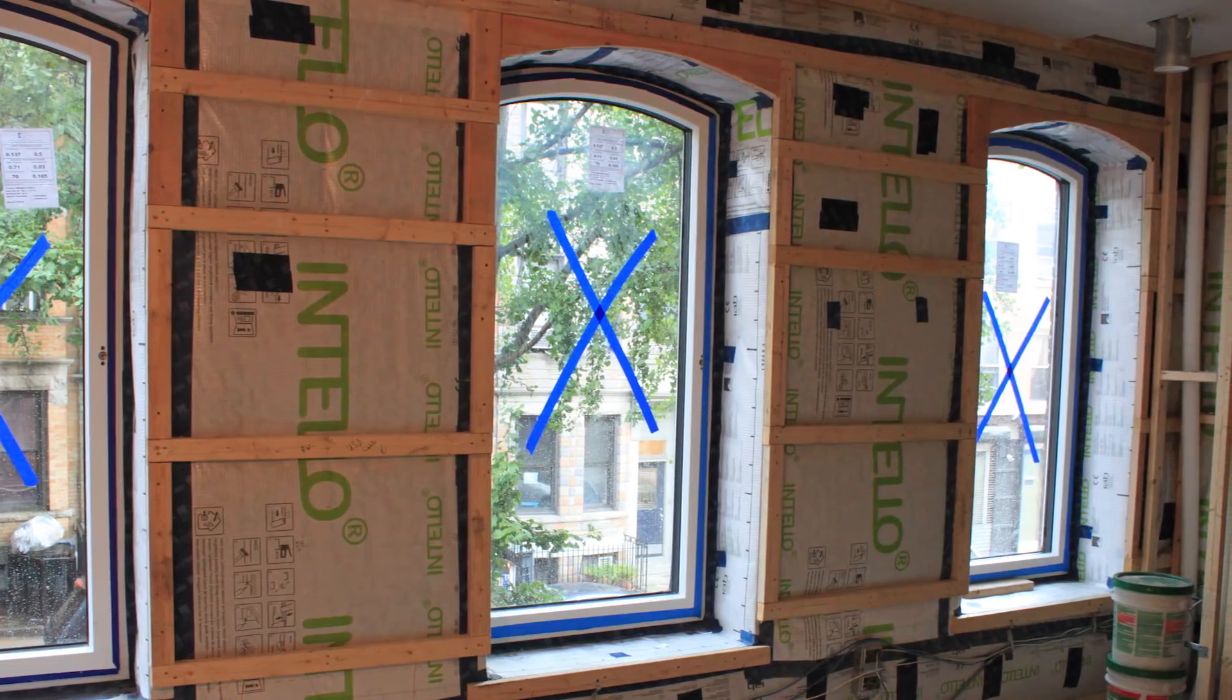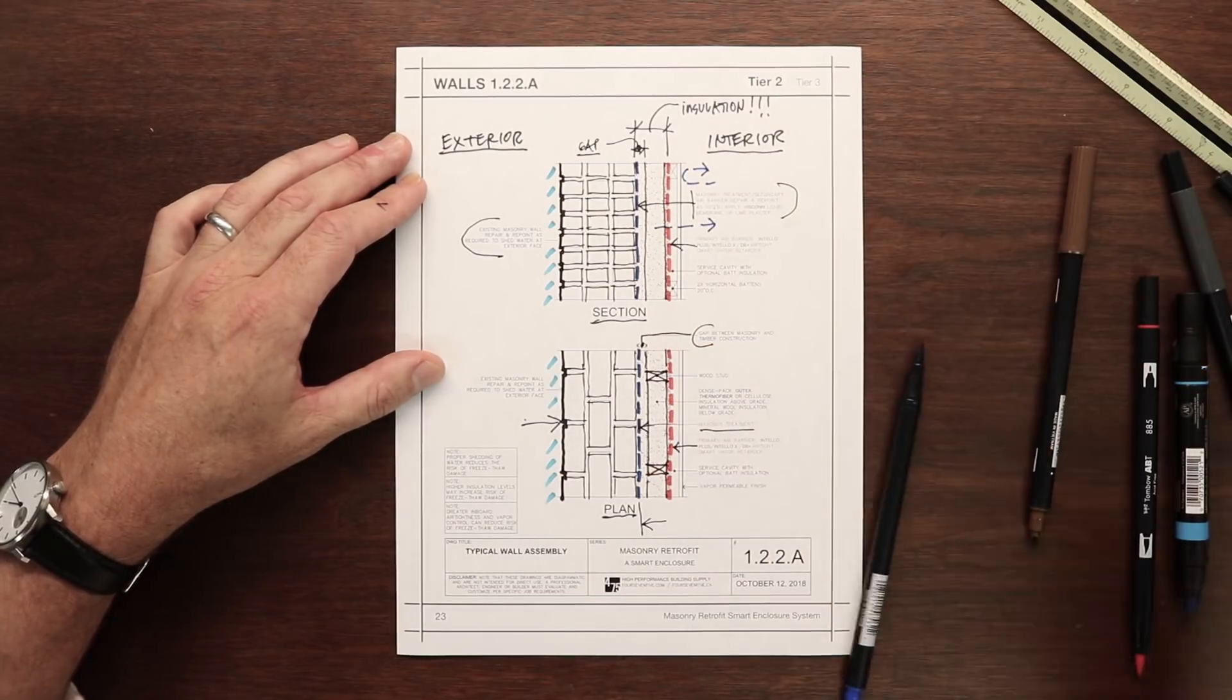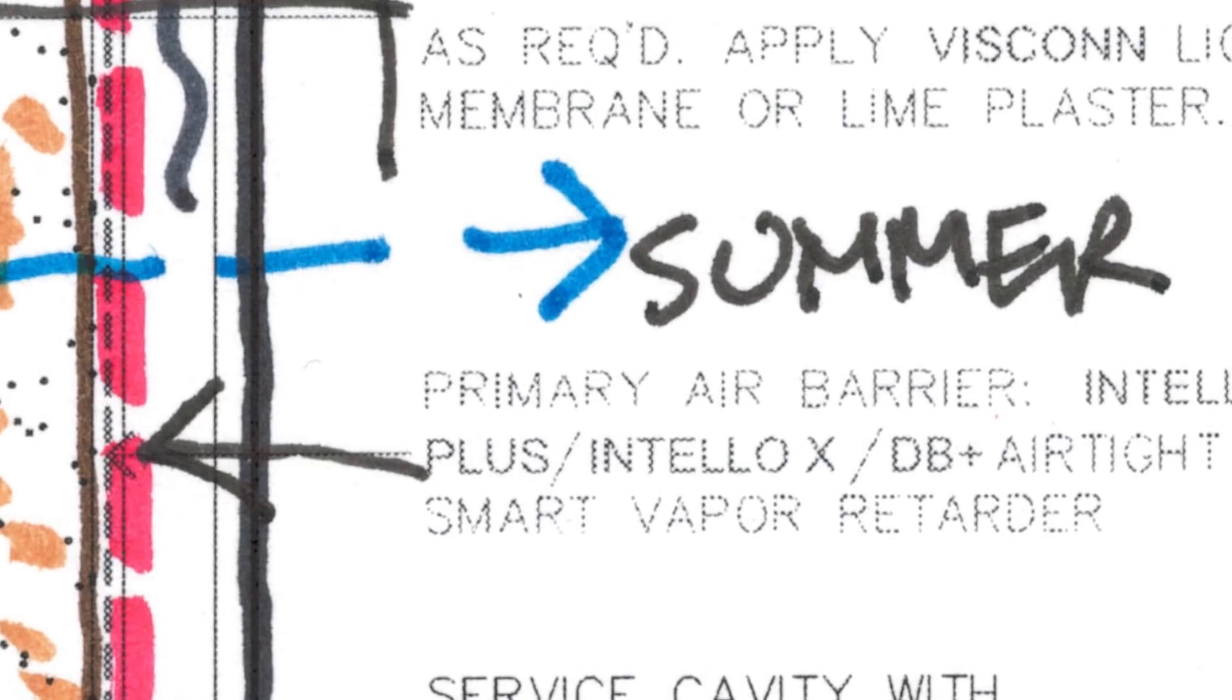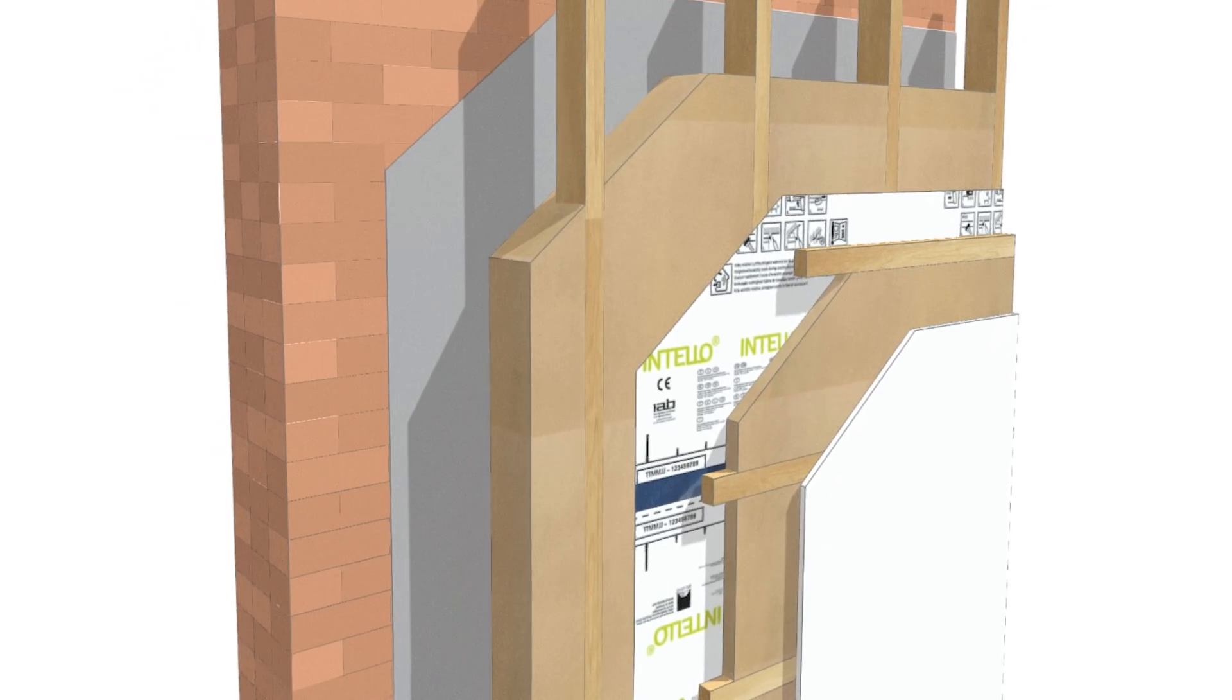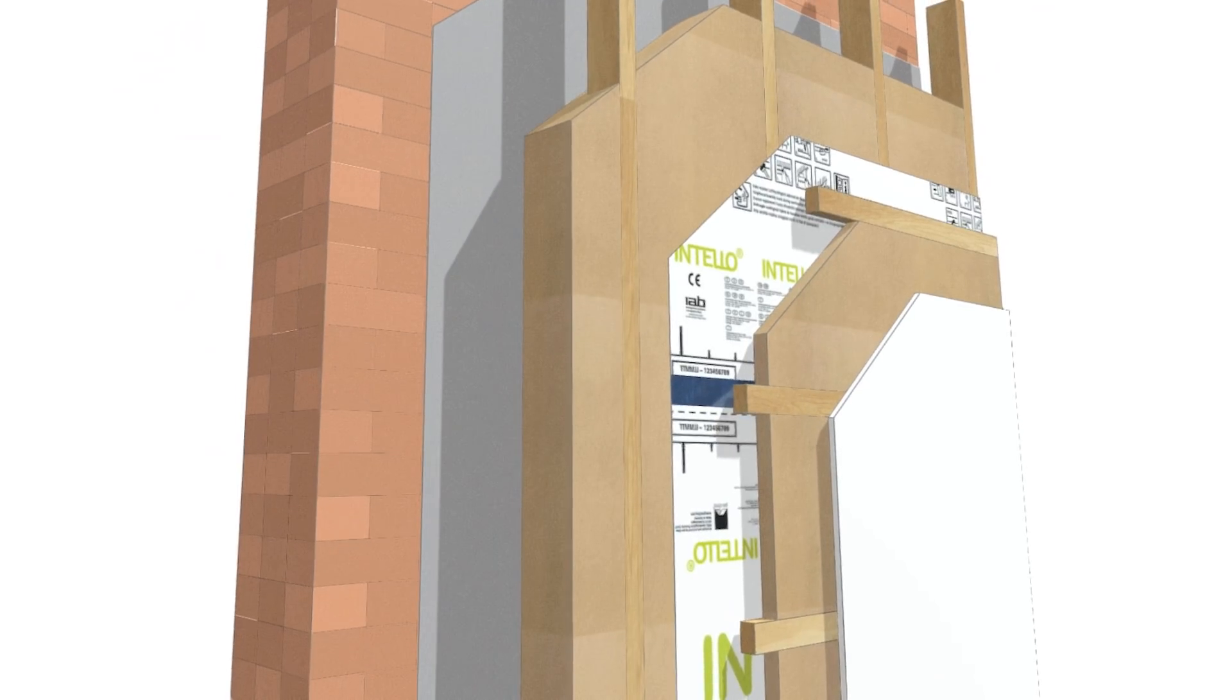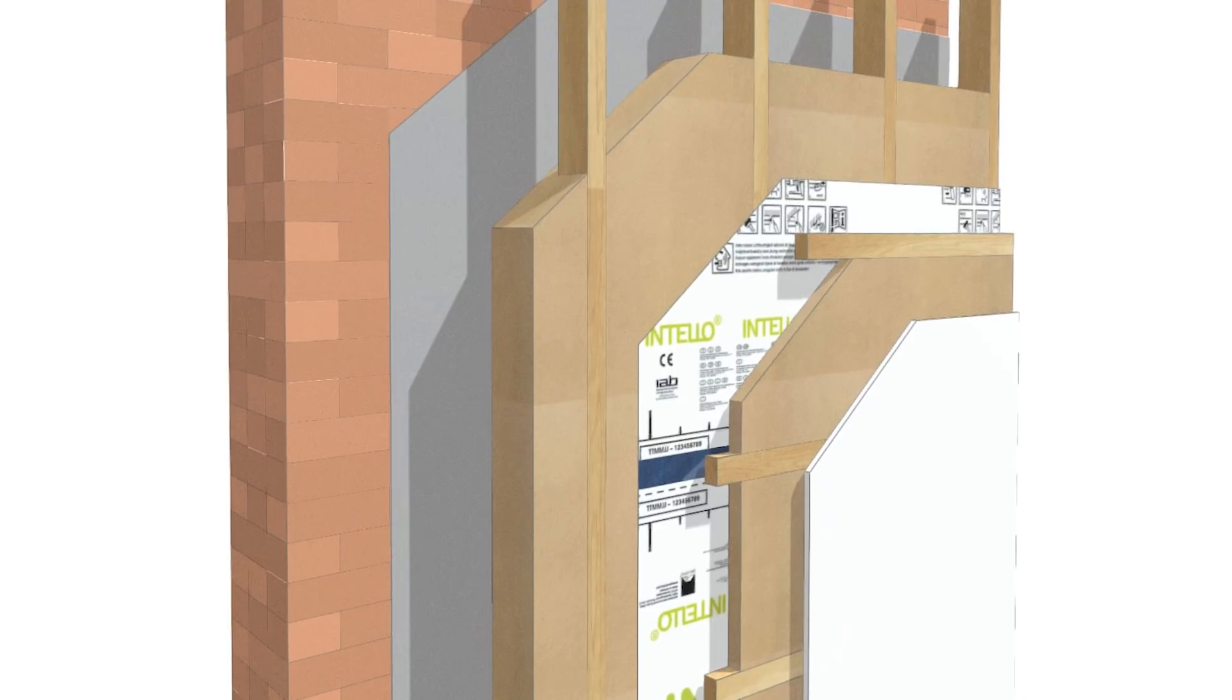Because this air barrier is a smart vapor retarder too, it will minimize wetting of the enclosure in winter and allow robust drying inward in the summer. We tape up the Antello seams with Tescon Vanna to make it airtight. With air tightness and smart vapor control, the wall's drying potential is maximized, and the risk of moisture damage, including freeze-thaw, is further minimized.